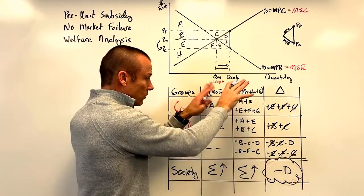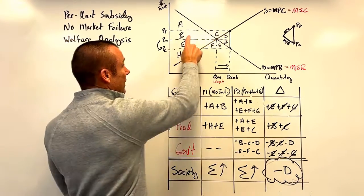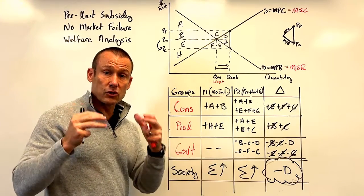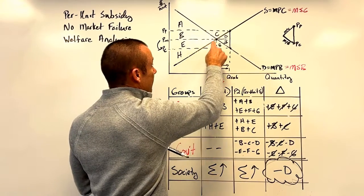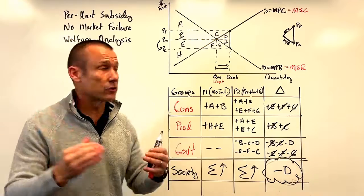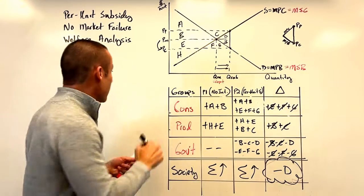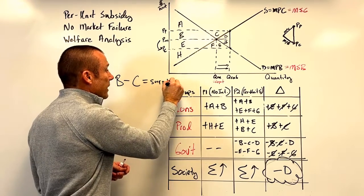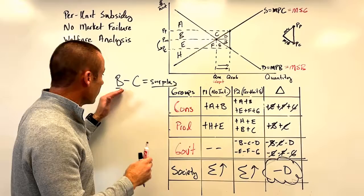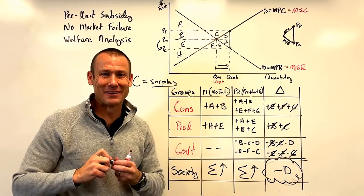The producer's benefit from the subsidy is b, c, and d — the portion of government money flowing to them. The consumer's benefit from the subsidy is e, f, g, and i. Together that accounts for all the money given out. Remember: benefit minus cost equals surplus — these are two different things. The surplus changes are what we tracked in the welfare table, but the benefit of the subsidy refers to the total dollar amount received.